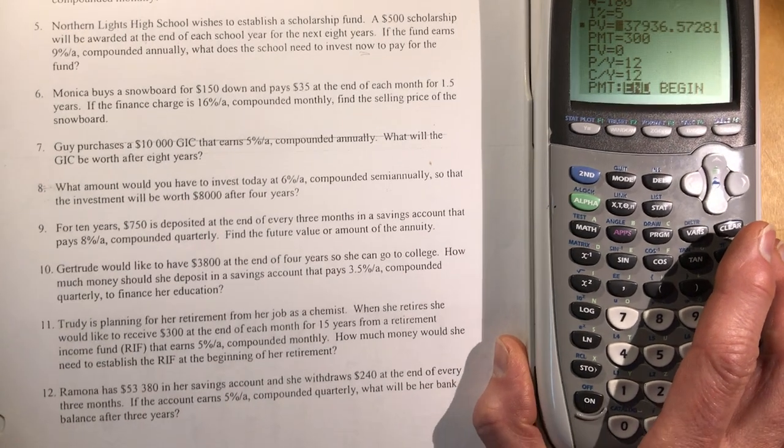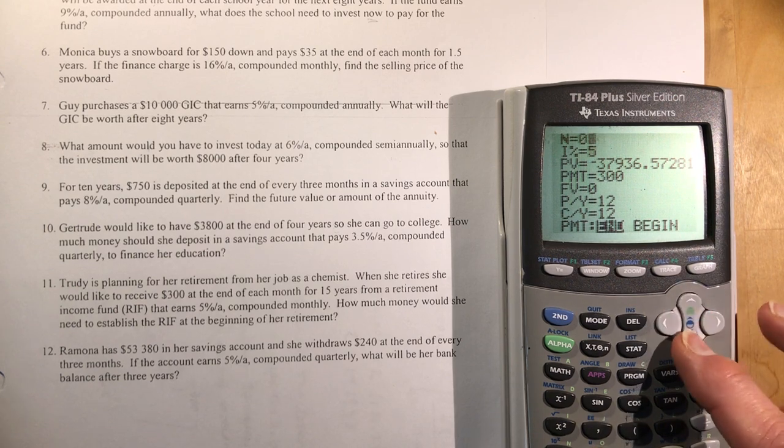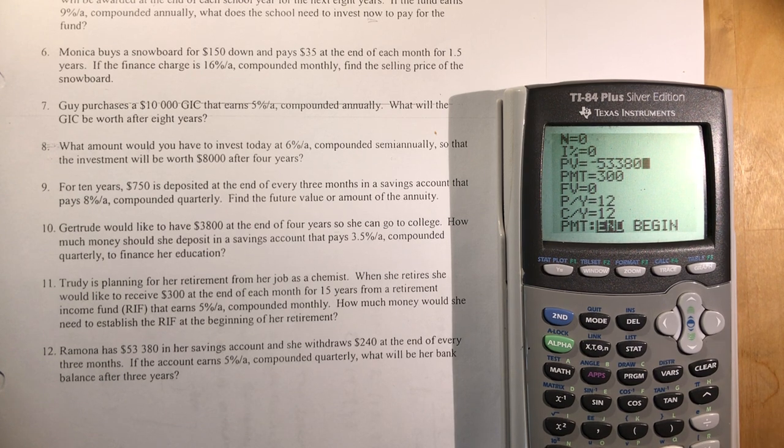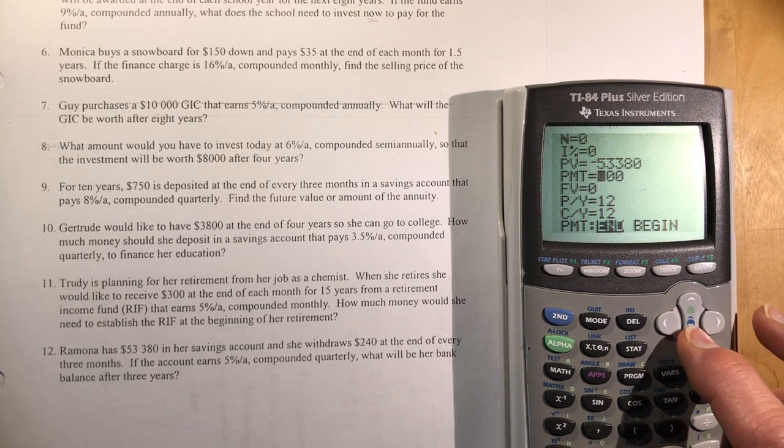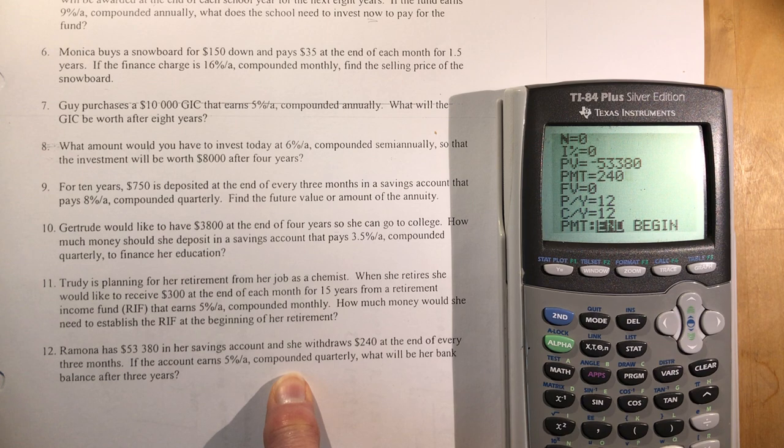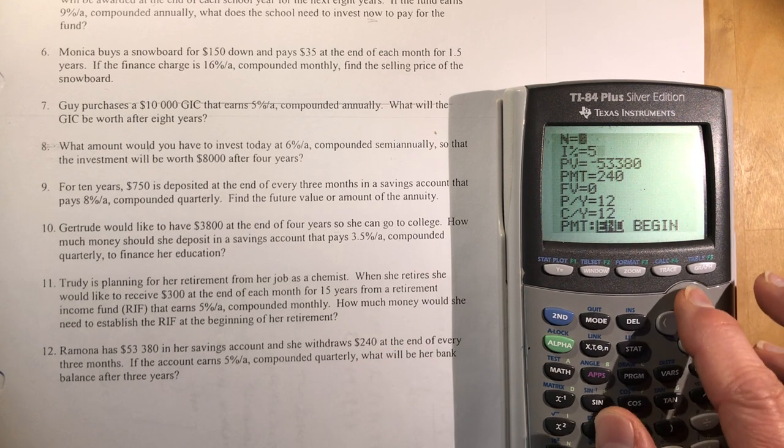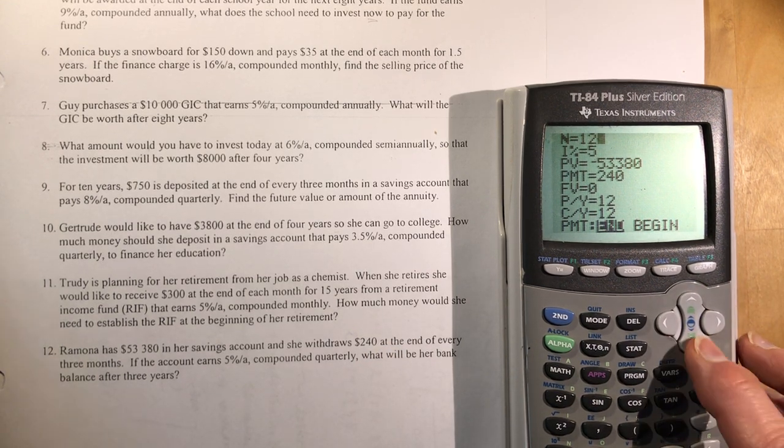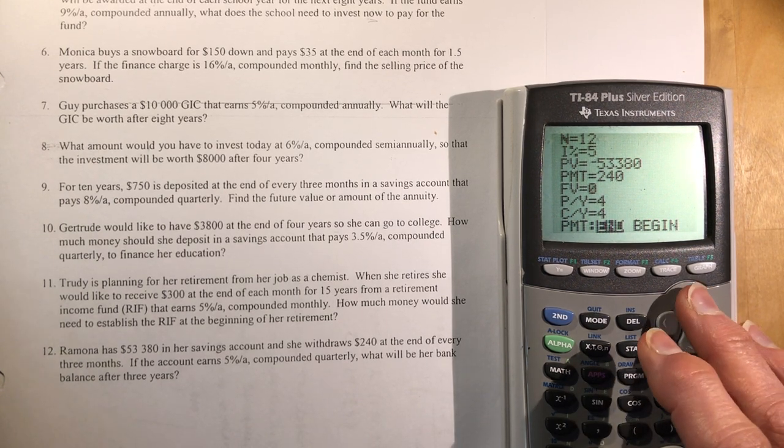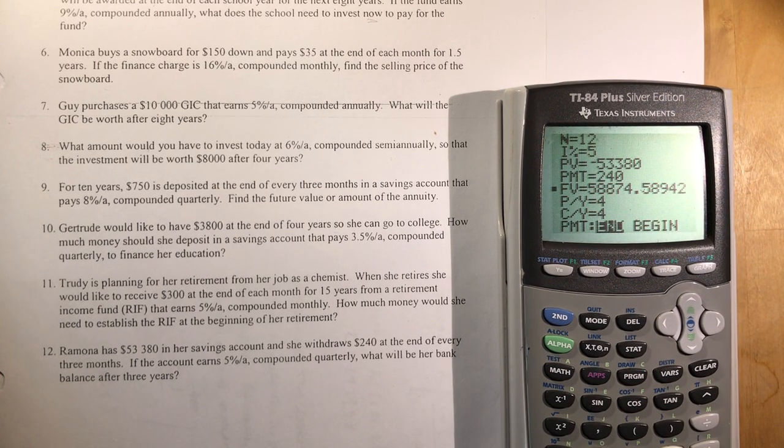Ramona has $53,380 in her savings account. That's a present value. She wants to withdraw $240, that's her payment at the end of every three months, so that's quarterly. The interest rate is 5% quarterly for three years. This needs to be 12. We've got 5, and quarterly so we need 4. We want to know the future value. Alpha, enter.